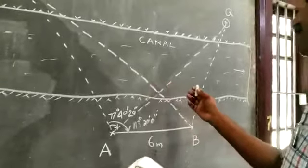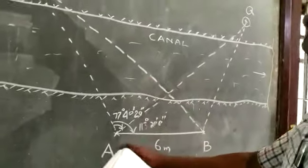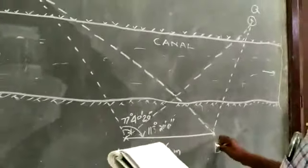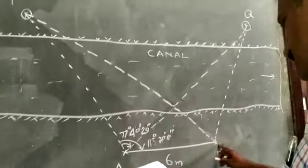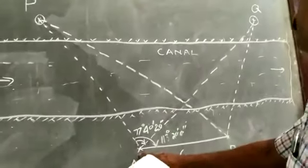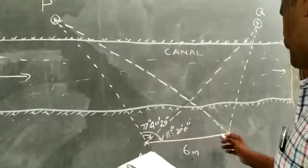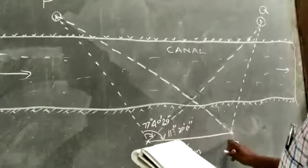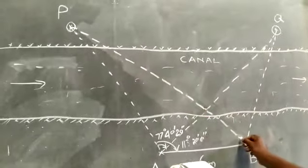And after this, we shifted the instrument from A to B and fixed zero at A and we read the angle ABP.